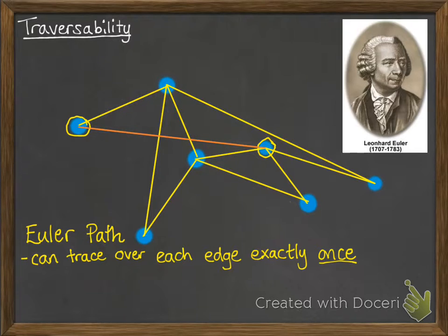Now if we had just one more edge, say something like this, it means we could get back to the start point. If we close that path off and finish where we started, that's called an Euler circuit.